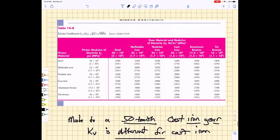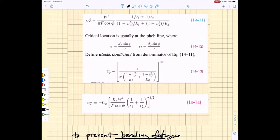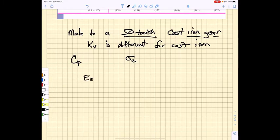And in order for us to calculate that contact stress, we need to know a few things. We need to know the elastic coefficient for the material pair. So that means I need to know the pinion elastic modulus, the gear elastic modulus, and the Poisson's ratios of the two.